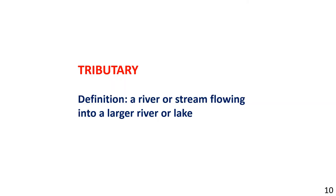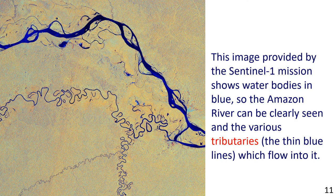Next: Tributary. Definition: a river or stream flowing into a larger river or lake. The picture shows a satellite image of the Amazon. The sentence reads: This image provided by the Sentinel-1 mission shows water bodies in blue, so the Amazon river can be clearly seen and the various tributaries — the thin blue lines — which flow into it.